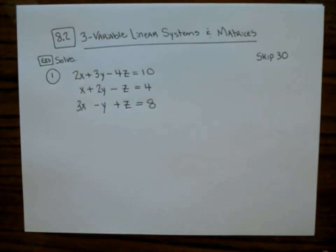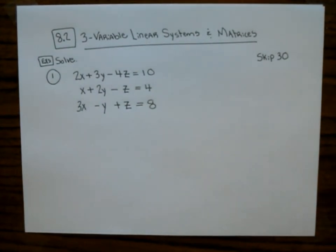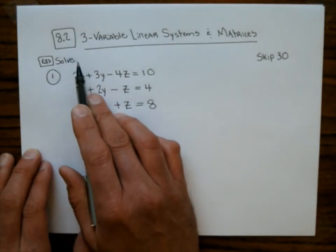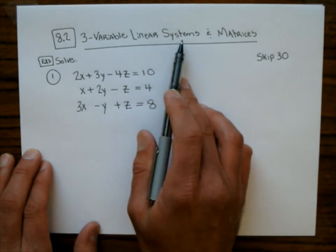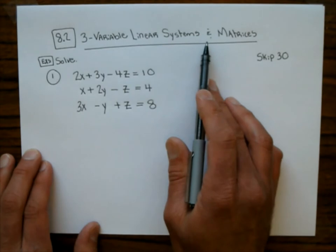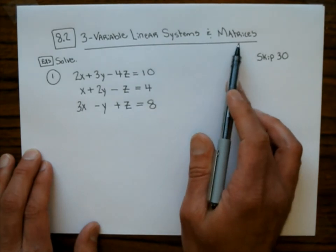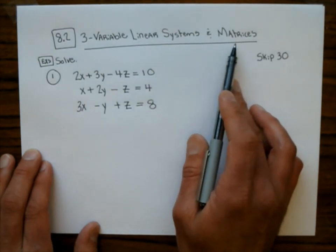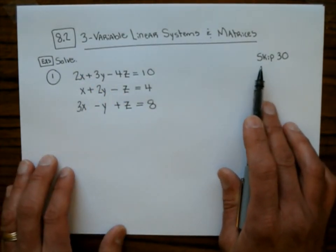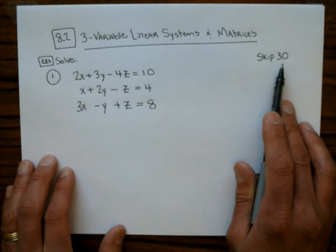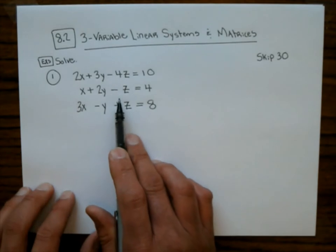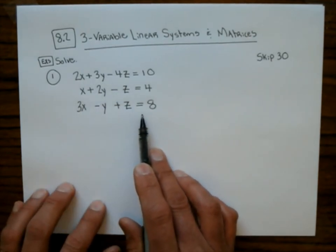Math 242, Cuesta College. I'm Joe Vasta. We're going to cover 8.2. Now 8.1 was called two variable linear systems. 8.2 is three variable linear systems and an introduction to something called matrices, which we'll get more into in 8.3. One thing you want to note is we're going to skip number 30 on the homework. This section has equations, systems, that look like this.